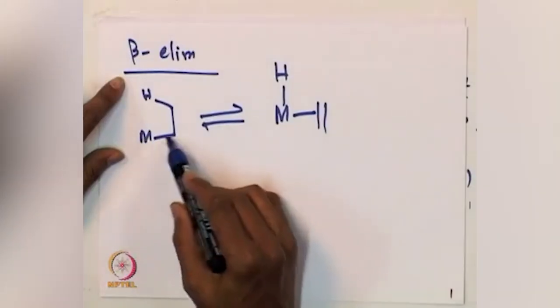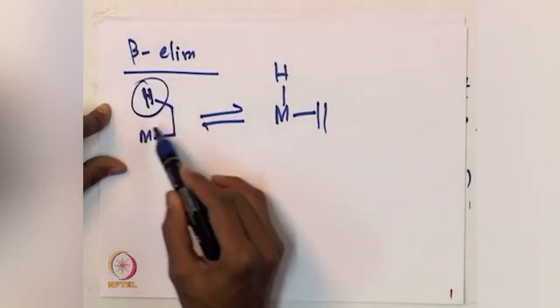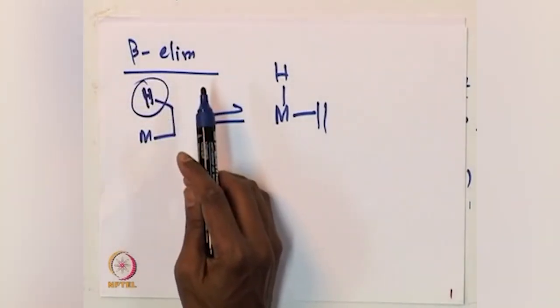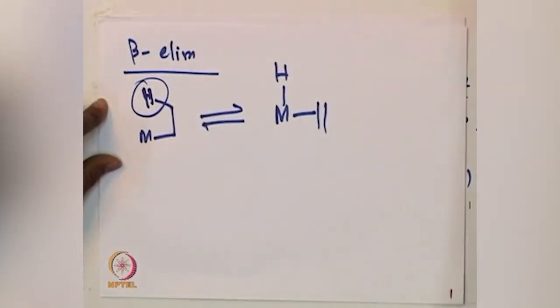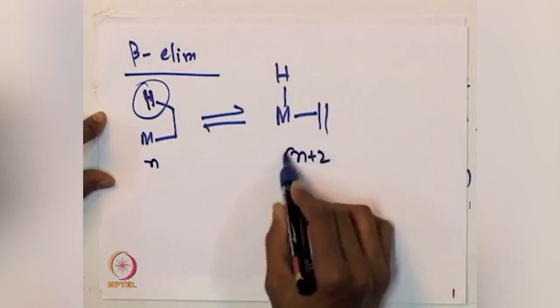We started discussing in the last class about beta elimination. Beta elimination, as you have learned by now, is the microscopic reverse of beta migratory insertion. We have also seen that this is a four-center reaction mechanism. Beta elimination involves metal alkyl species — the hydride being the primary one. If this is an n-electron complex, this is going to be an n+2 electron complex.